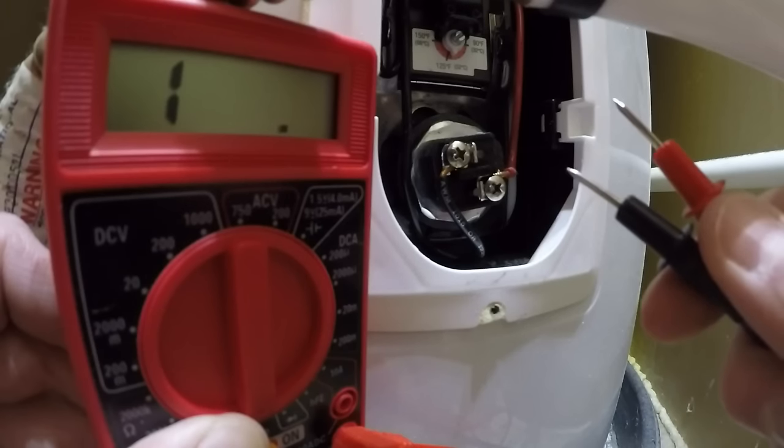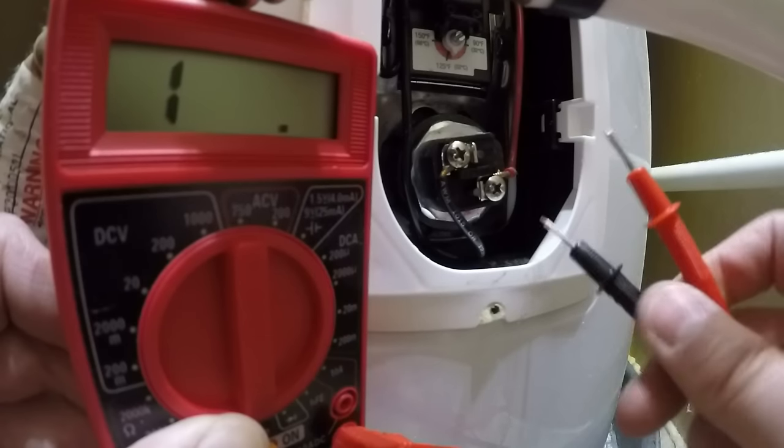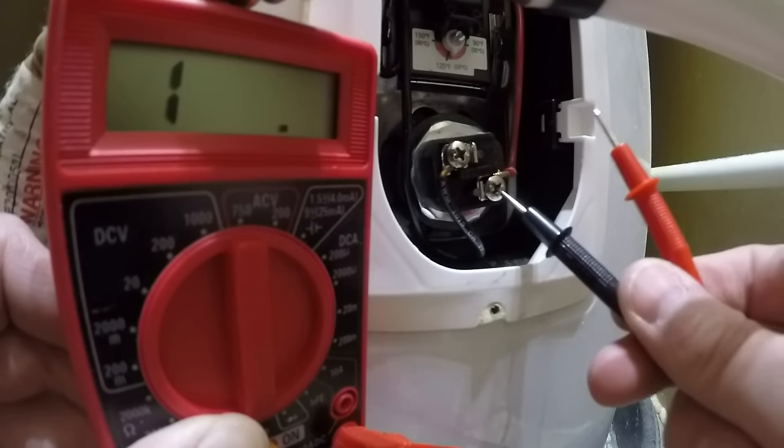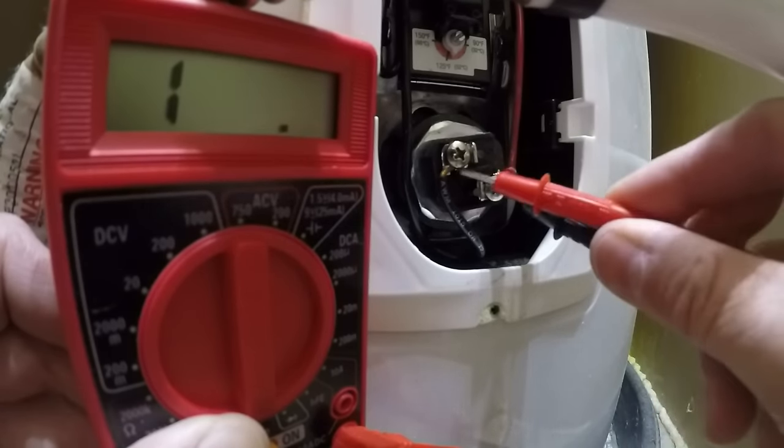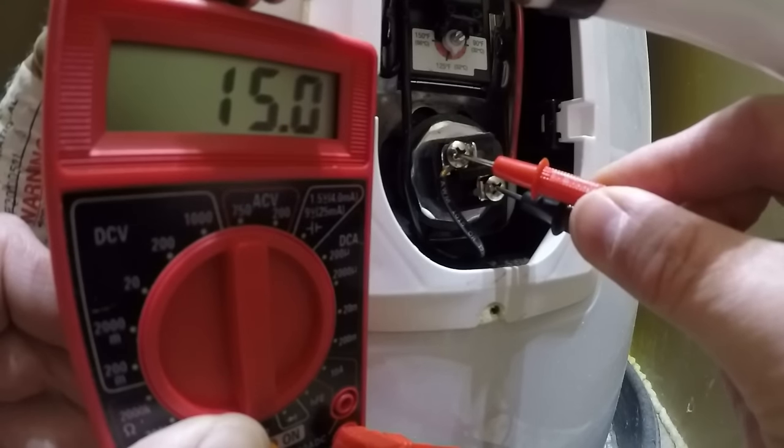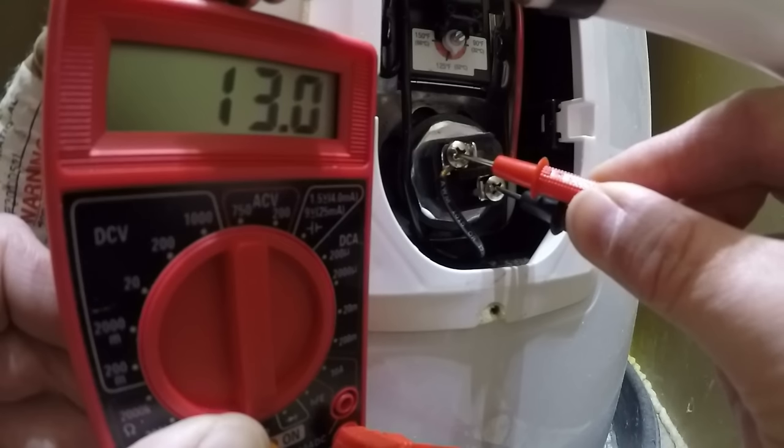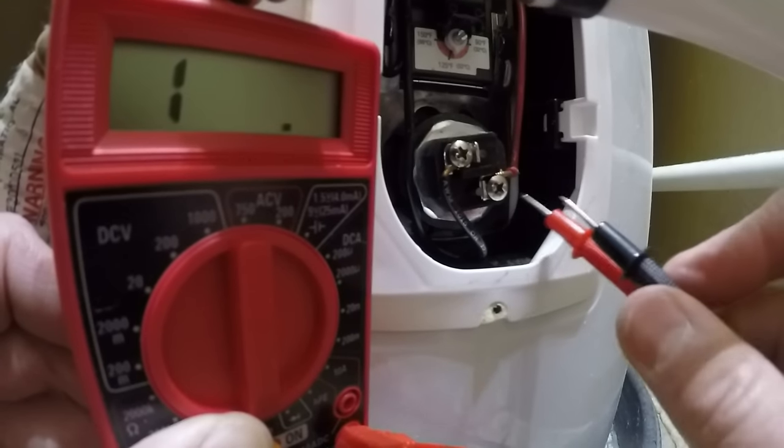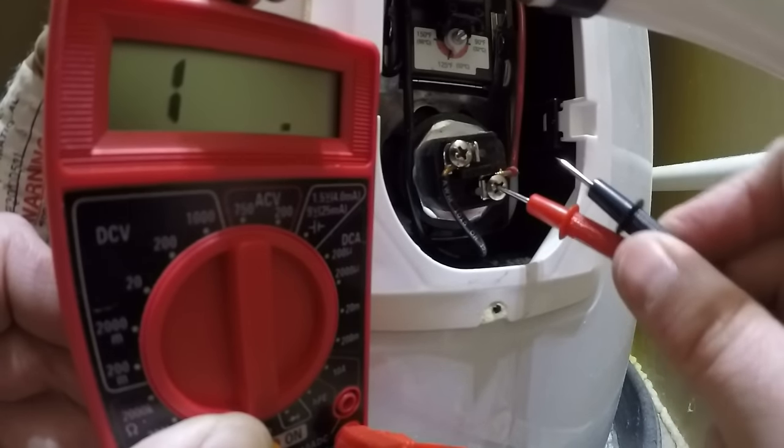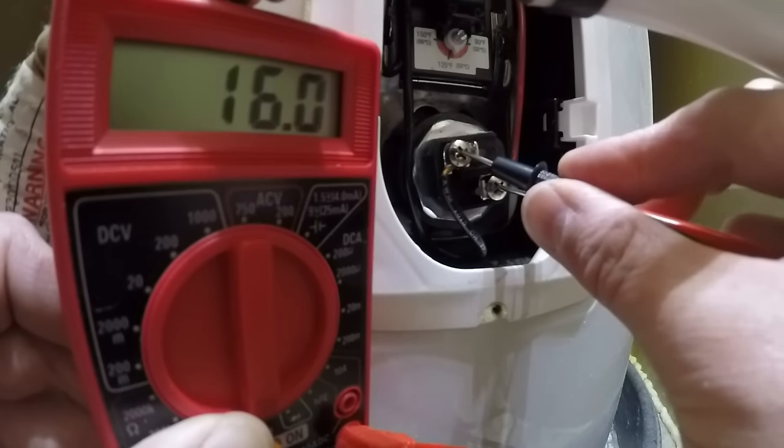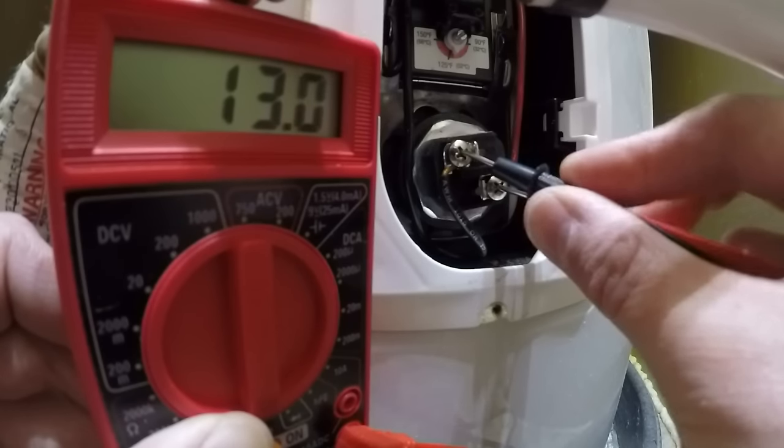Now I'm down here at the lower heating element. We're going to do the same test as we did above. Just touch the black one into that screw and the red one into that screw. And you can see I get a reading of 13 something there. Again, anywhere from 10 to 16 ohms. That's pretty consistent. I know that one's good. And if I switch these around, it really shouldn't matter. I should get the same reading. So there's continuity with that one as well.